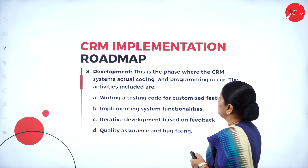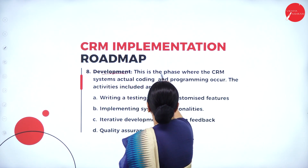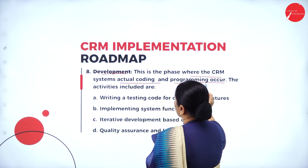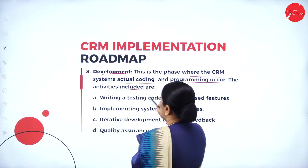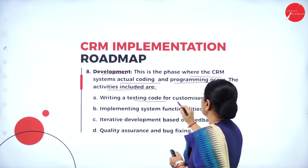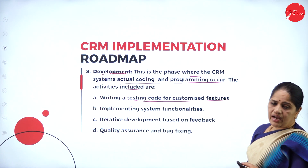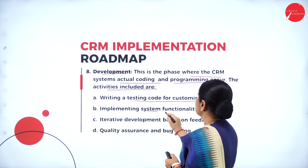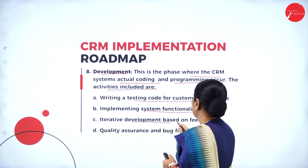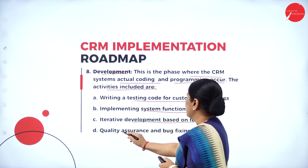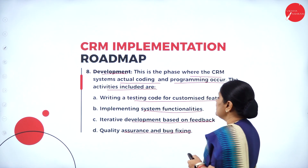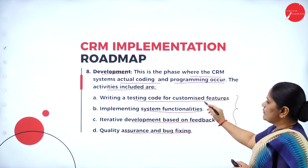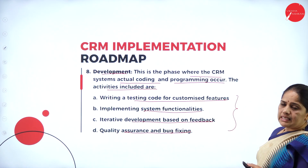Development is the phase where the CRM system's actual coding and programming occur. The activities included are writing and testing code for customized features, implementing system functionalities, iterative development based on feedback, and quality assurance and bug fixing. When developing the CRM system, we should make note of all these aspects.